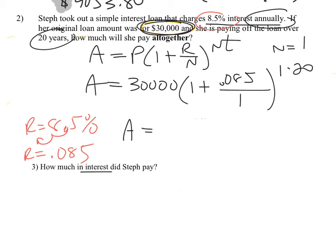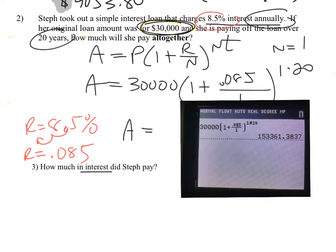She borrowed $30,000, but when you borrow $30,000 you have to pay a lot more back to the bank. It's going to be shocking when you evaluate this on your calculator — you're borrowing $30,000 at a very high interest rate and paying it back for 20 years. On your calculator, you're going to be paying back $153,361.38. That's the answer to problem two — that's how much in total you're going to pay the bank back.